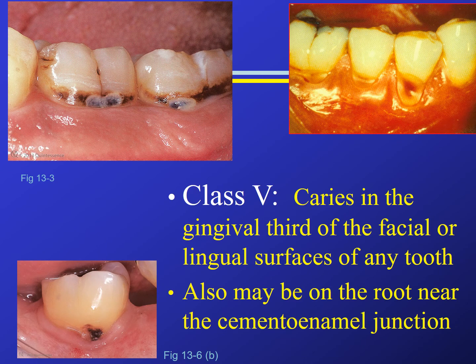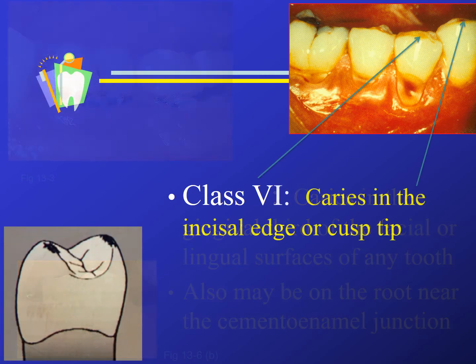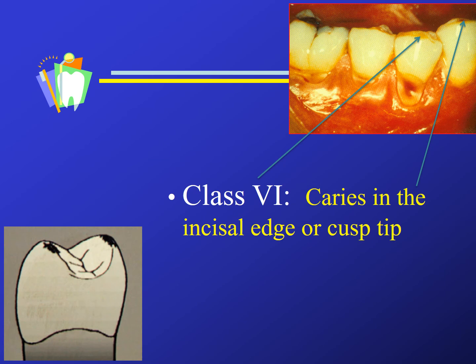Class fives are found in the gingival third of the facial or lingual surfaces of any tooth. Remember, if it is mesial or distal, it would be class three in anterior or class two if posterior. Class fives may also be seen on the root surface near the CEJ. If the caries is more apical than the CEJ area, we typically call it root caries instead of giving it a classification name.